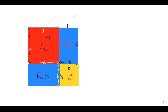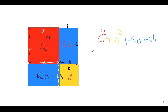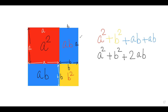Now we add the separate areas: the red square has area a², the yellow square has area b², the first blue rectangle has area ab, and the second blue rectangle also has area ab. So the total is a² + b² + ab + ab = a² + b² + 2ab.